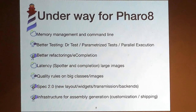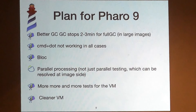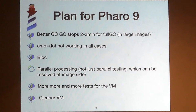For Pharo 9 we are trying to improve the GC, because we need better GC — specifically improving the stop time when we have a big image and do a full GC. We need to work a lot on improving error handling, especially the Command-dot to interrupt the execution of a tight loop. And the always-promised blog — well, this year we will make another effort to make it happen.